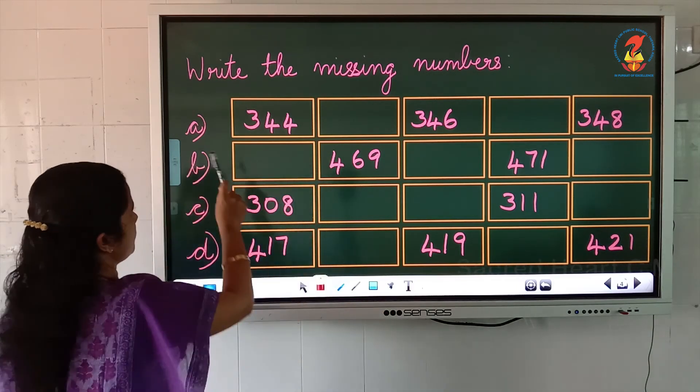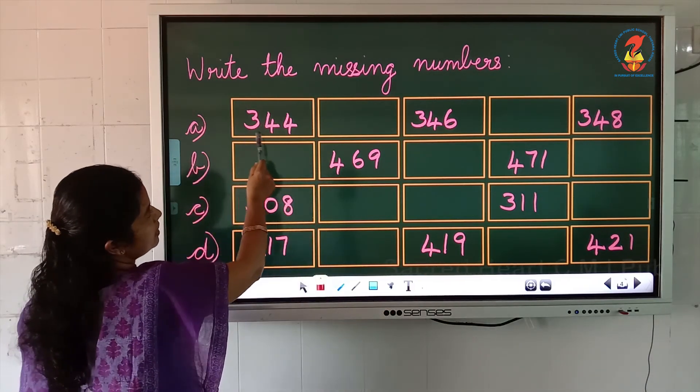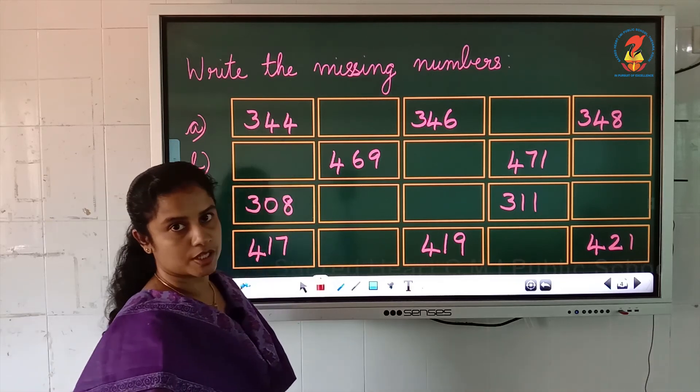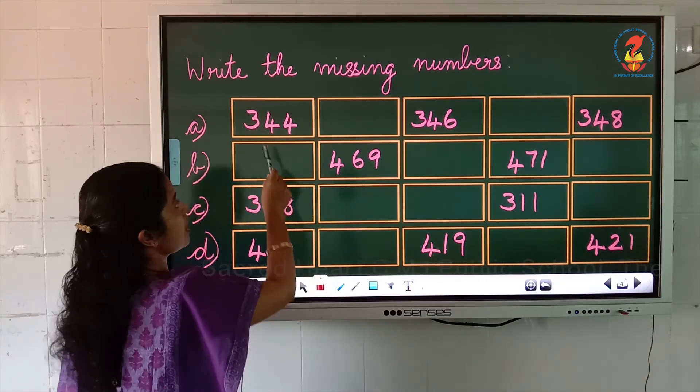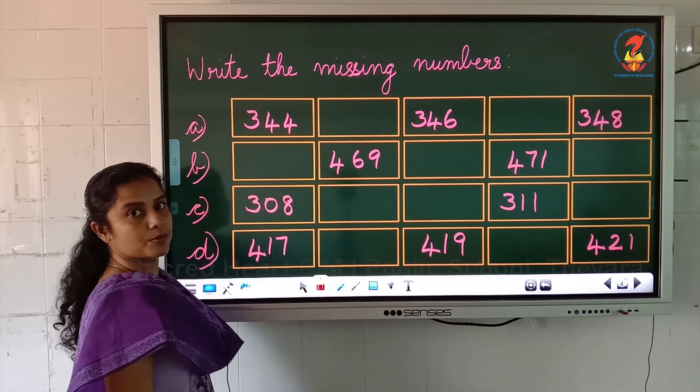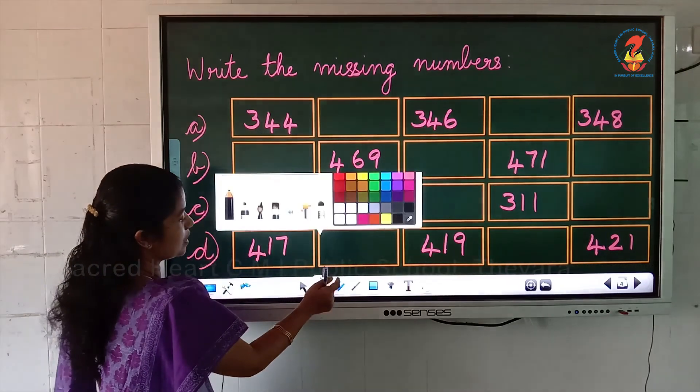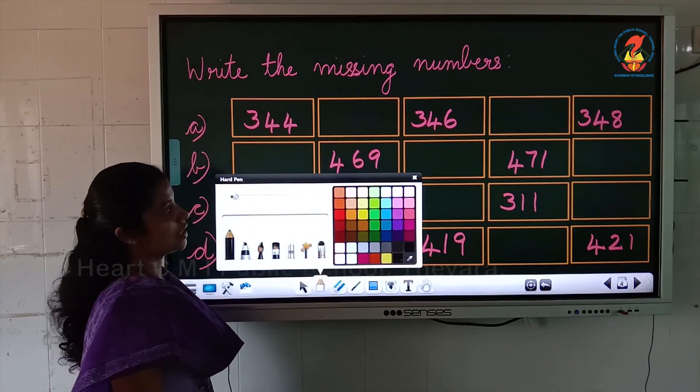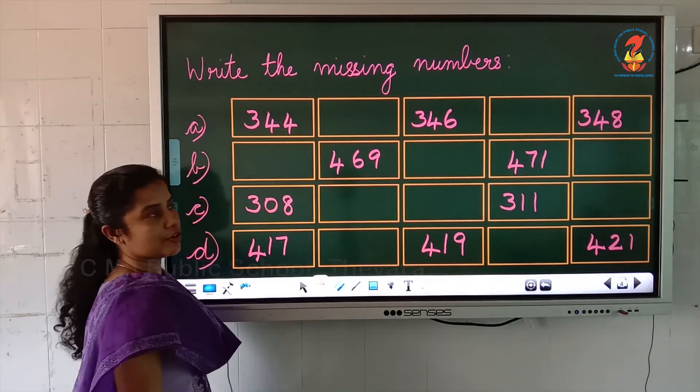The first question. What is the number written here? 344. What comes after 344? 345.